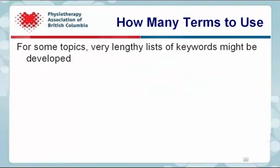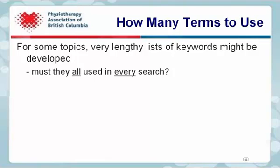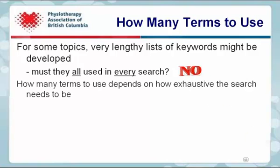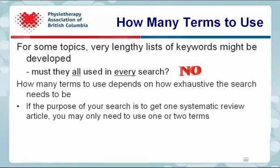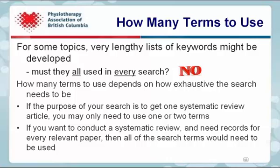So how many terms should you use in a search? For some topics, very lengthy lists of keywords might be developed — but must they all be used in every search? The answer is no. How many terms to use depends on how exhaustive the search needs to be. If the purpose of your search is to get one systematic review article, you may only need to use one or two terms. If you want to conduct a systematic review and need records for every relevant paper, then all of the search terms would need to be used.